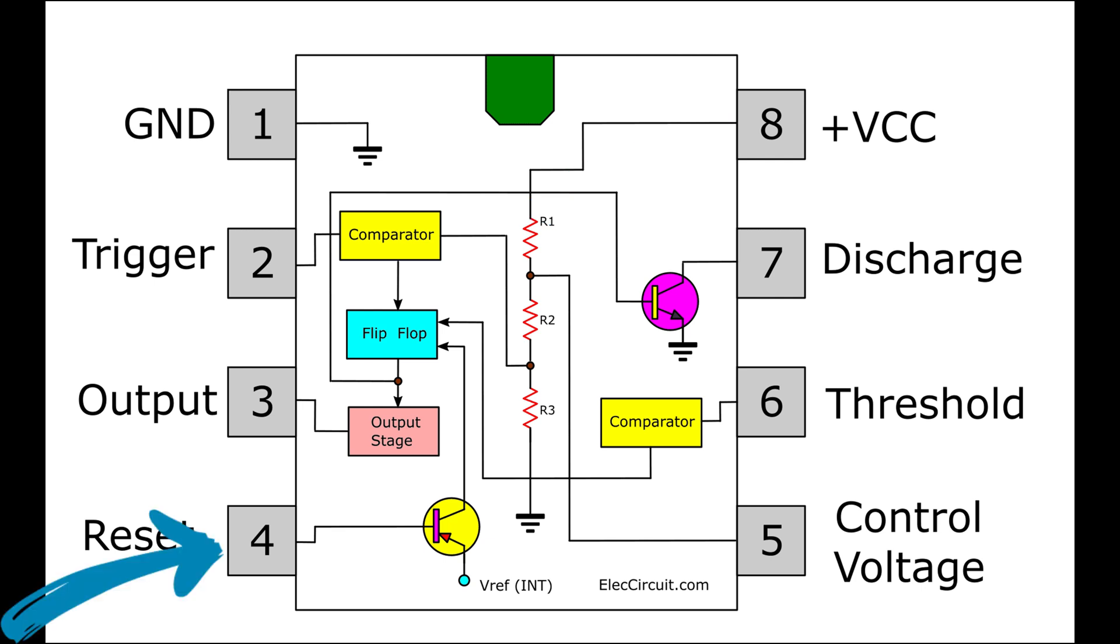Pin 4 is reset. It is activated when the voltage on it is 0V. Pin 3 is for output pulses.